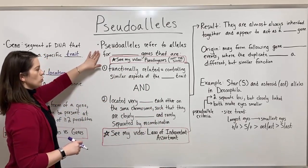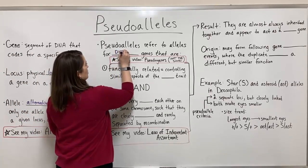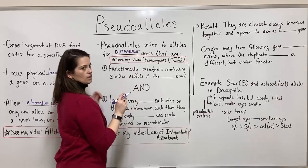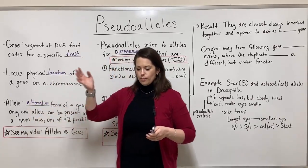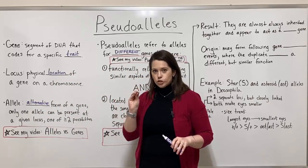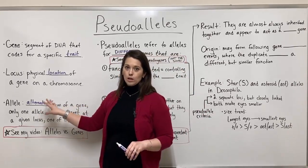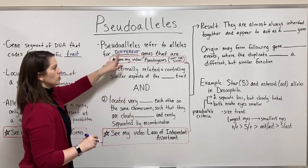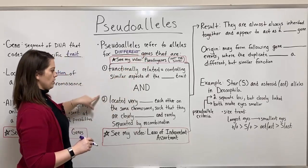Pseudo-alleles refer to alleles for — and this is important — for different genes. The examples I gave earlier, like the purple flower color or the white flower color, those are different alternative forms of the same gene, which we call alleles. Pseudo-alleles are where we're talking about alleles that are actually for different genes, and they must fulfill both of two specific criteria.